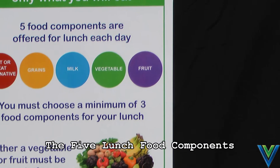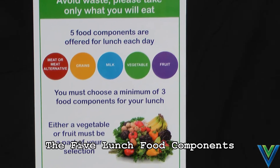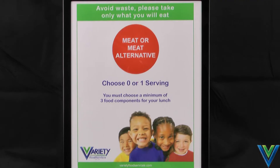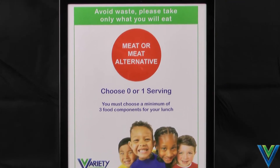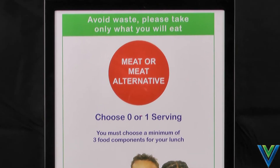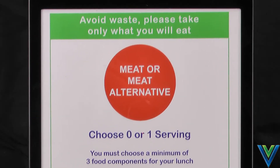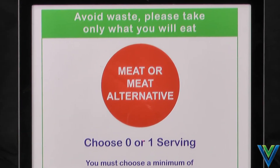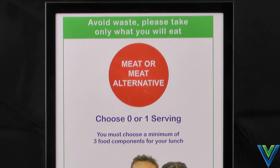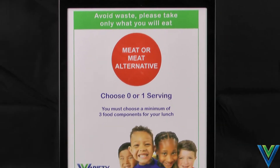Now let's look at the five required lunch food components in more detail. The first component is the meat or the meat alternative. This is normally the entree and usually consists of chicken, beef, fish, poultry, or other meat substitutes.